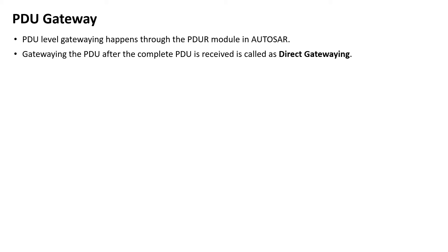PDU-level gateway happens through the PDUR module in AUTOSAR. During gatewaying, the PDUR module acts both as the receiver and the transmitter of the PDU. It receives the PDU from one lower-layer module and transmits it to the same or another lower-layer module. A PDU can be configured to be received in one interface module and gatewayed to many interface modules. However, the received PDU can only be gatewayed to interface modules or TP modules, but not both.